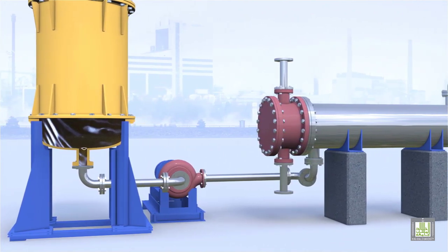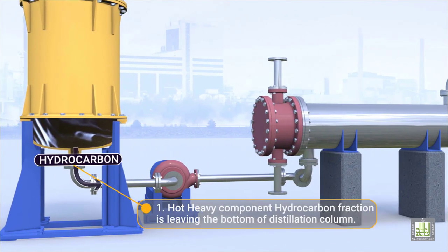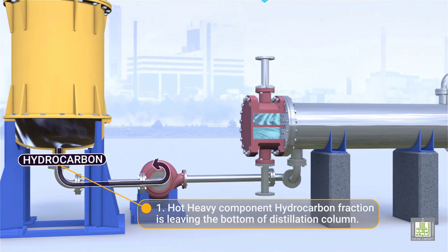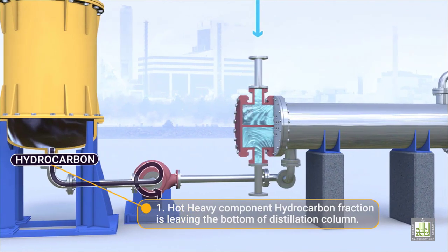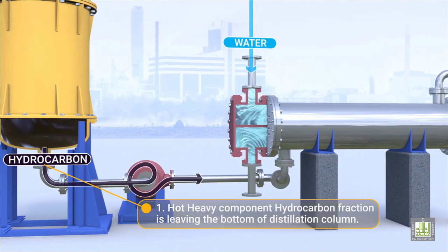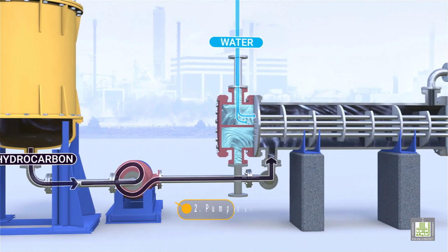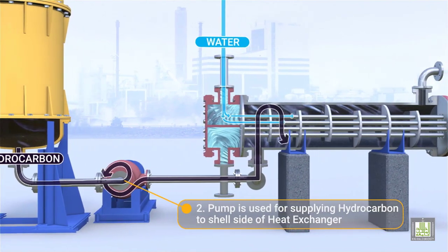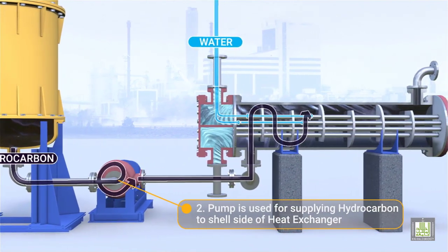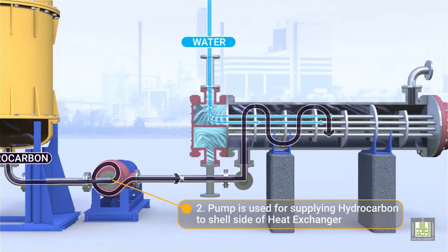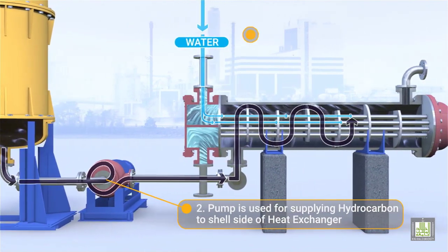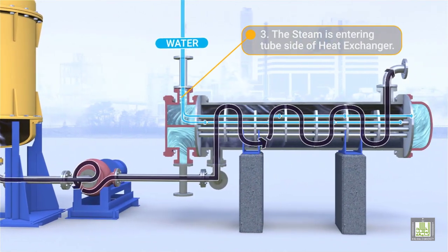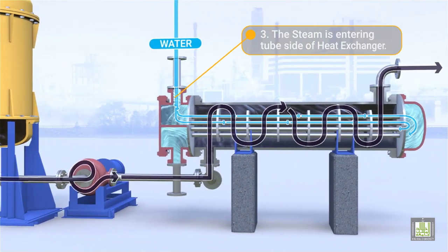Flow Pattern: 1. Hot heavy component hydrocarbon fractions leave the bottom of the distillation column. 2. A pump supplies hydrocarbon to the shell side of the heat exchanger. 3. Steam enters the tube side of the heat exchanger.